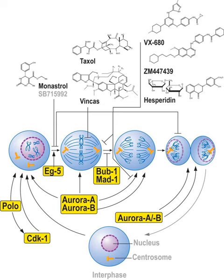ADP release is slowed without trapping the EG5-ADP intermediate. S-monostrol binding to EG5 induces a stable conformational change in the motor domain that favors ATP re-synthesis after ATP hydrolysis. The aberrant interactions with the microtubule and the reversals at the ATP hydrolysis step alter the ability of EG5 to generate force, thereby yielding a nonproductive motor.